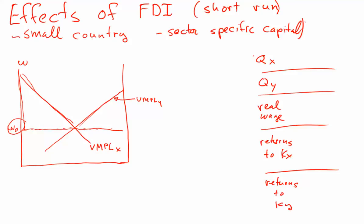Now we're going to look at the impact of the increase in the capital stock in X. I'm going to draw that as a shift up in the value of marginal product of labor for labor in X. Why is that? You've got an increased amount of capital that can be used with labor, and that's going to tend to increase the marginal productivity of labor at any level in that sector. So with more capital to work with in sector X, the labor there is going to be more productive.